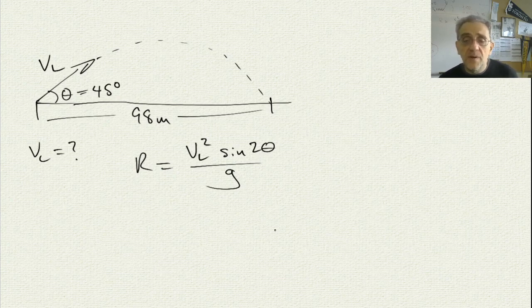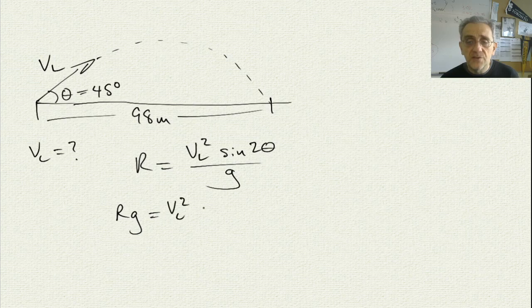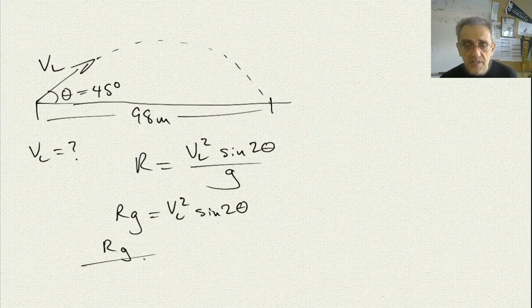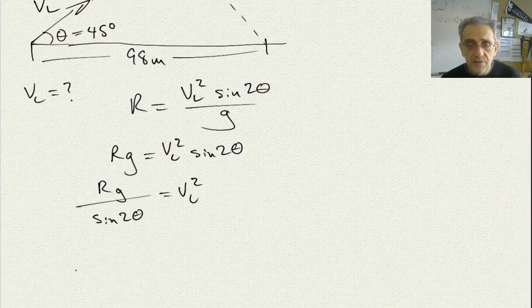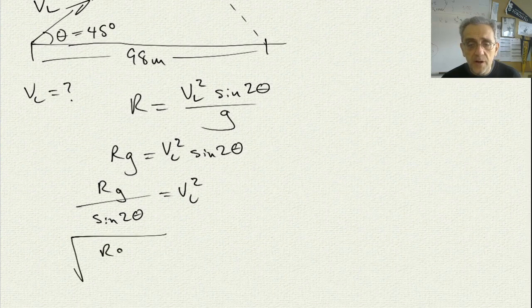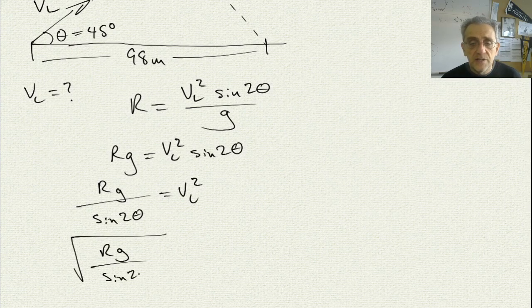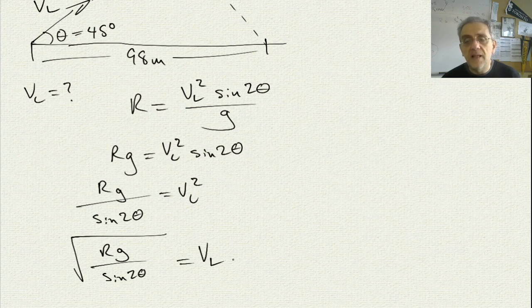So, the way I'm going to do this, I'm going to multiply both sides by G. I'm going to get RG equaling VL squared sine 2 theta. And now, I'm going to divide both sides by sine 2 theta. RG divided by sine 2 theta equaling VL squared. And then, I'm going to take the square root. And so, if I get the square root of RG over sine 2 theta, that's going to give me VL.